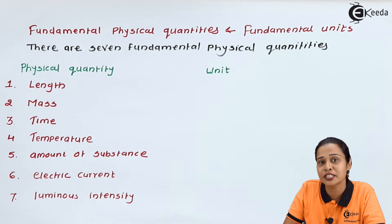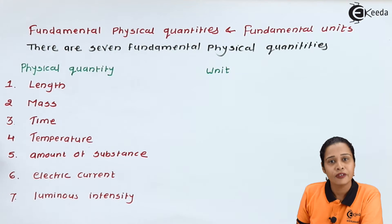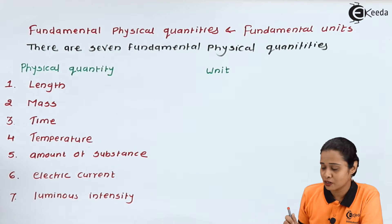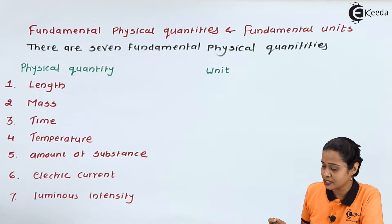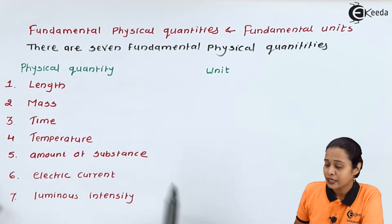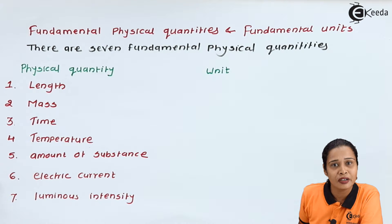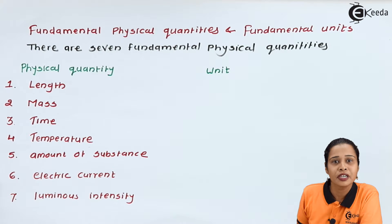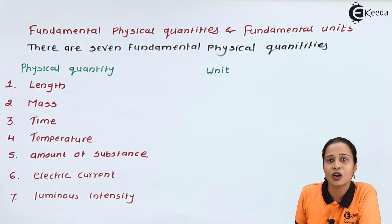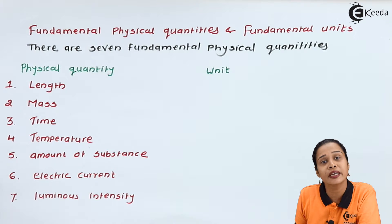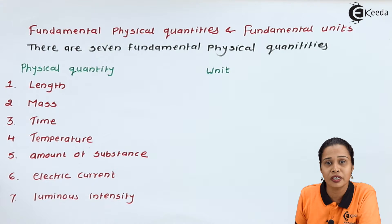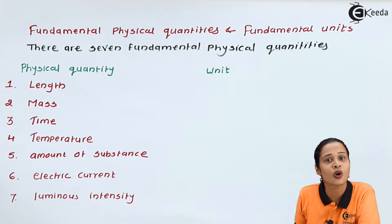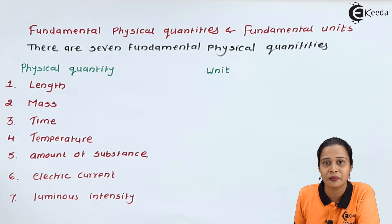Let's see what is fundamental physical quantity and their units. There are basically seven fundamental physical quantities. We can define a fundamental quantity as a physical quantity which does not depend on any other physical quantity for its measurement. These quantities are called fundamental physical quantities.